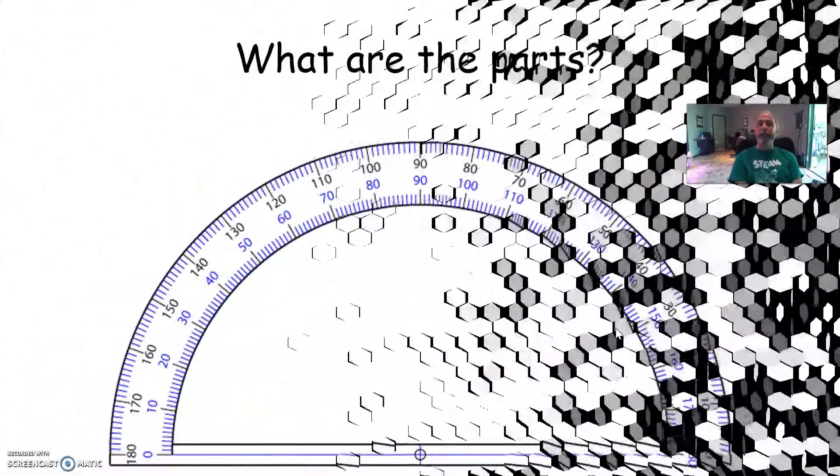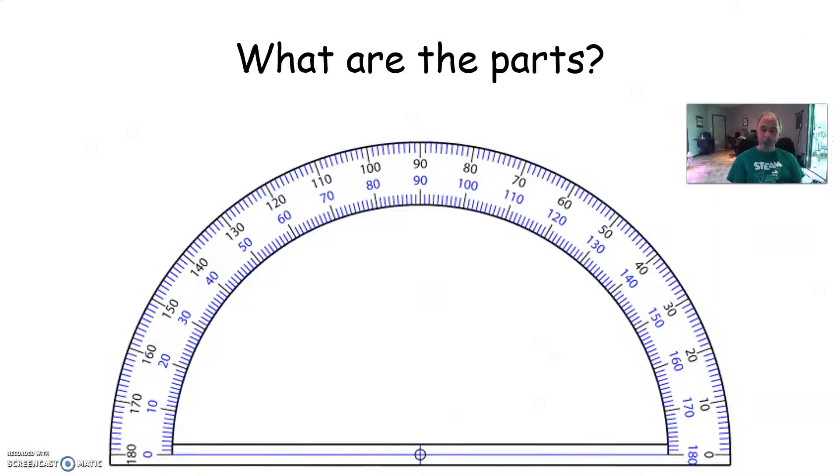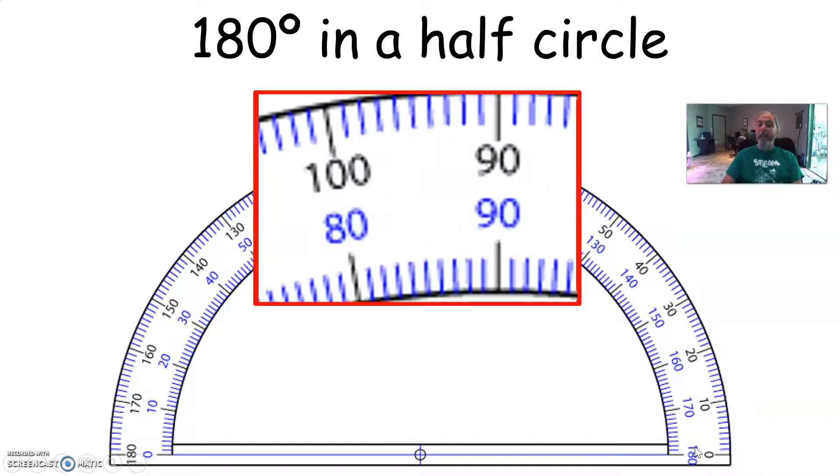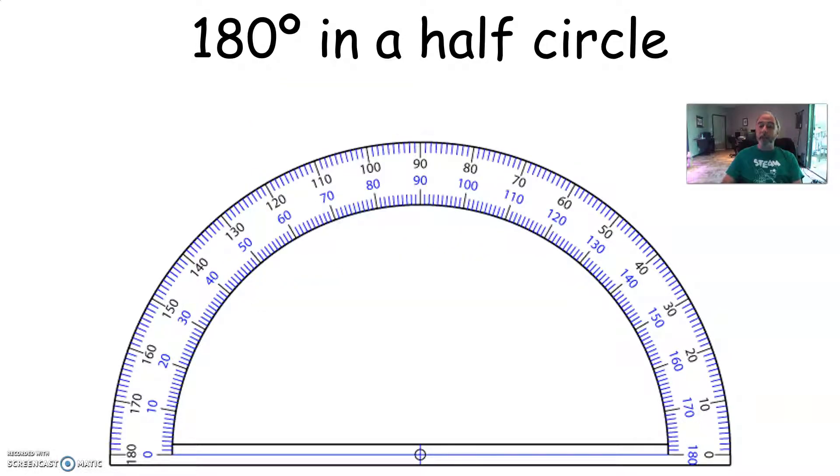To begin with, what are the parts of the protractor? Well, we have essentially a half a circle. If you start here at this zero, the blue one, and you go all the way around the other side, yes indeed, that is 180 degrees, or a half a circle. And if you start here at zero and you go all the way around to the other side, that's also 180 degrees. It goes both directions. Kind of cool, right?